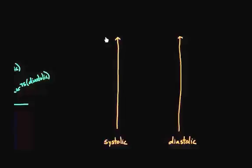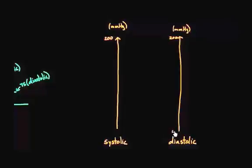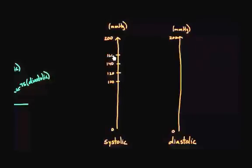So let's say this top end is really high pressure, like 200 millimeters of mercury, and at the very bottom would be 0. That means up here would be about 100, then 120, then 140, then 160, and then 180.